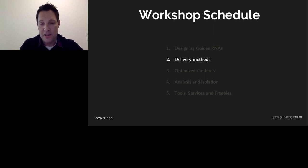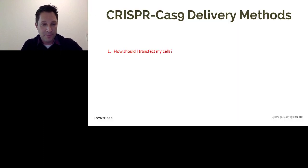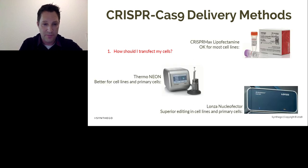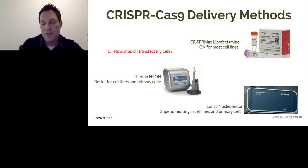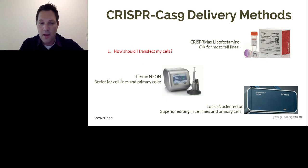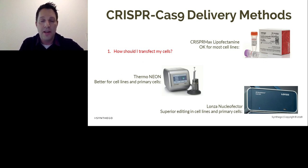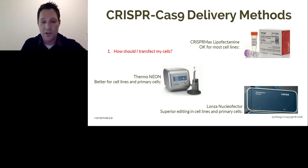Now let's talk about delivery methods. The most important consideration is how to transfect cells with CRISPR-Cas9 reagents. There are three good ways using the RNP approach. First, a lipofectamine-type reagent such as CRISPR-Max — okay for most cell lines. Second, electroporation using a system like the Thermo Neon, which works for cell lines and primary cells. Third, and what we use at Synthego, the Lonza Nucleofector system, which provides superior editing in many cell lines and primary cells due to optimized electroporation solutions and programs.